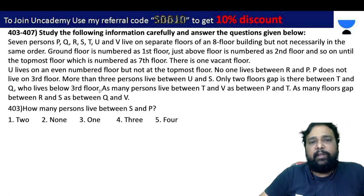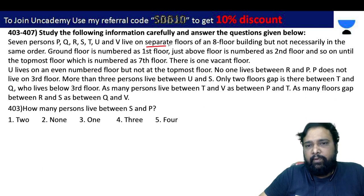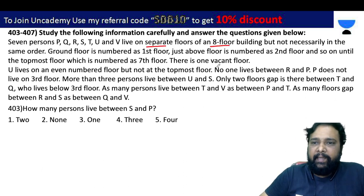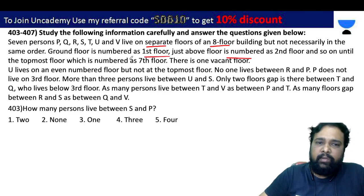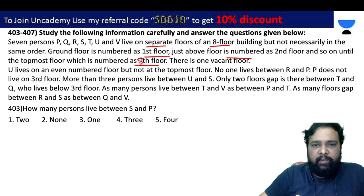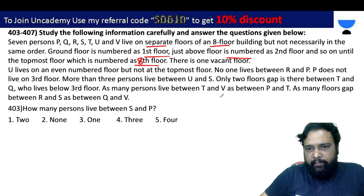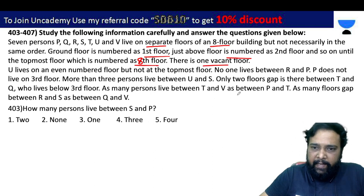Seven persons P to B live on separate floors of an eight-floor building, not necessarily in the same order. The ground floor is numbered one, and above it is two, and so on. The top floor is the eighth floor. There is one vacant floor among the eight floors.